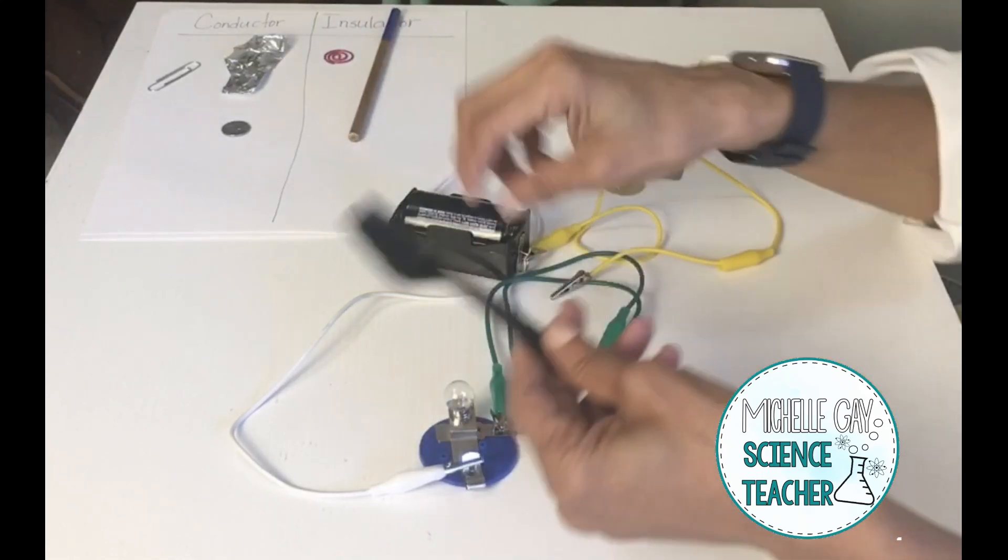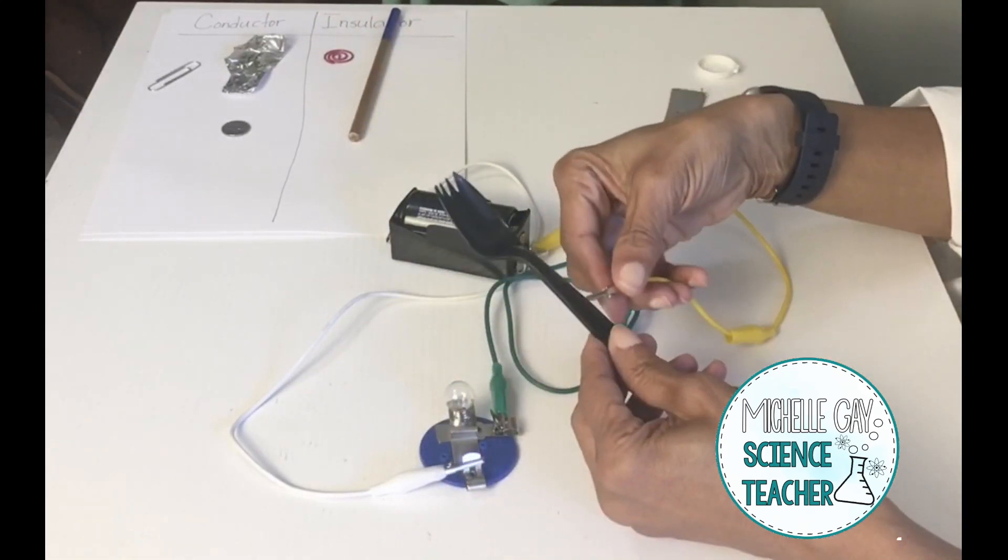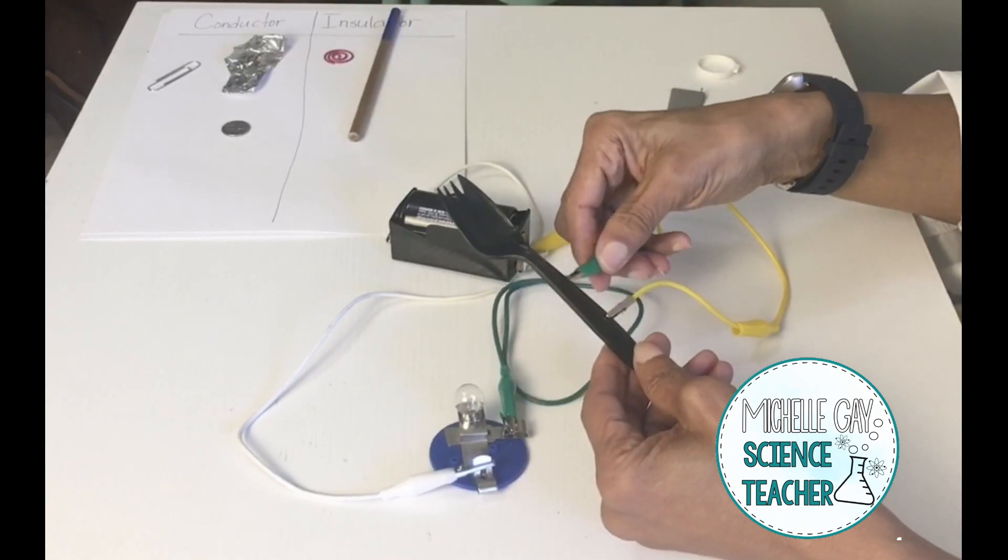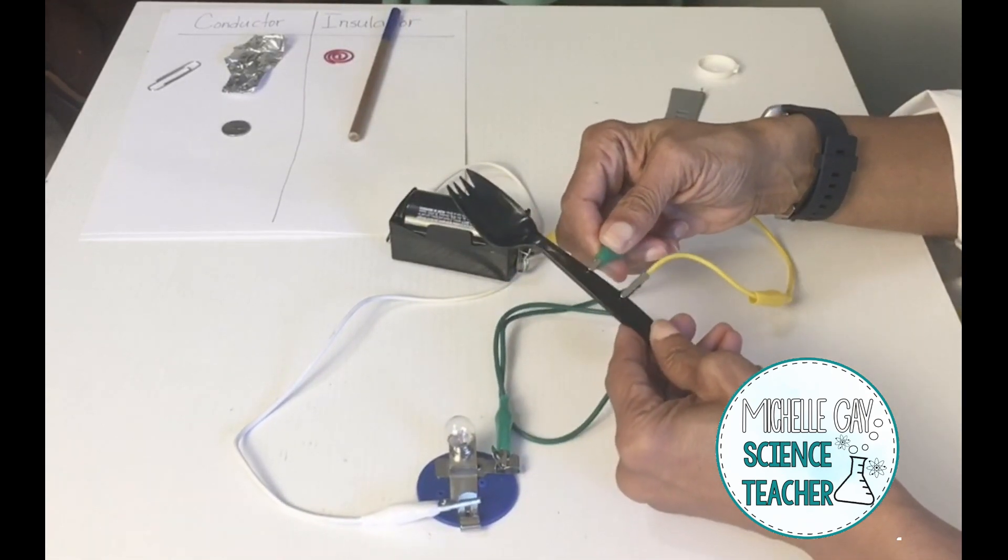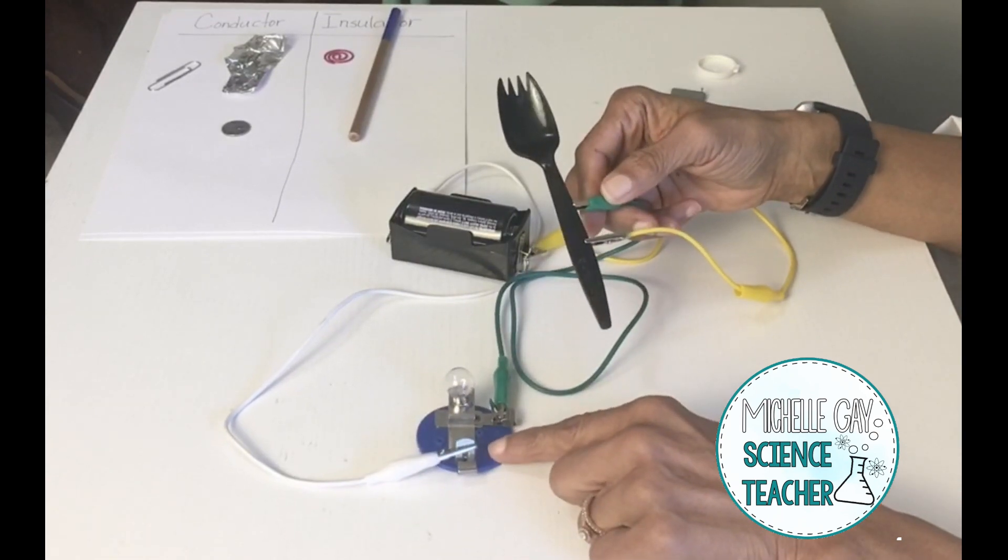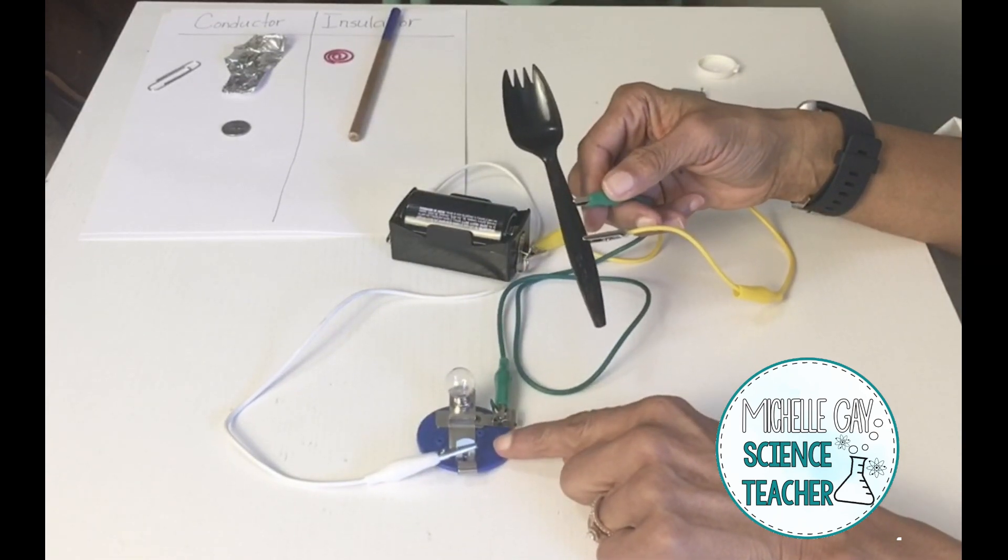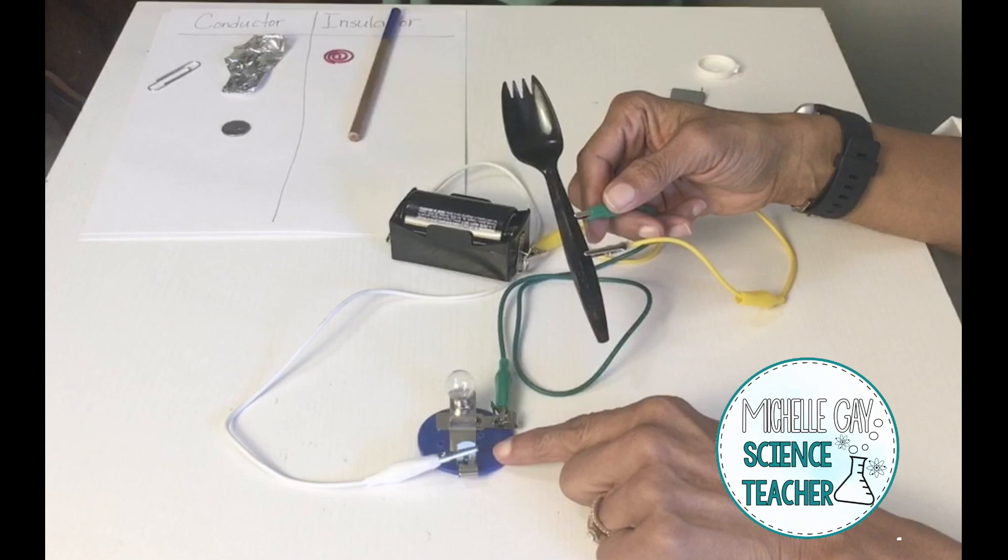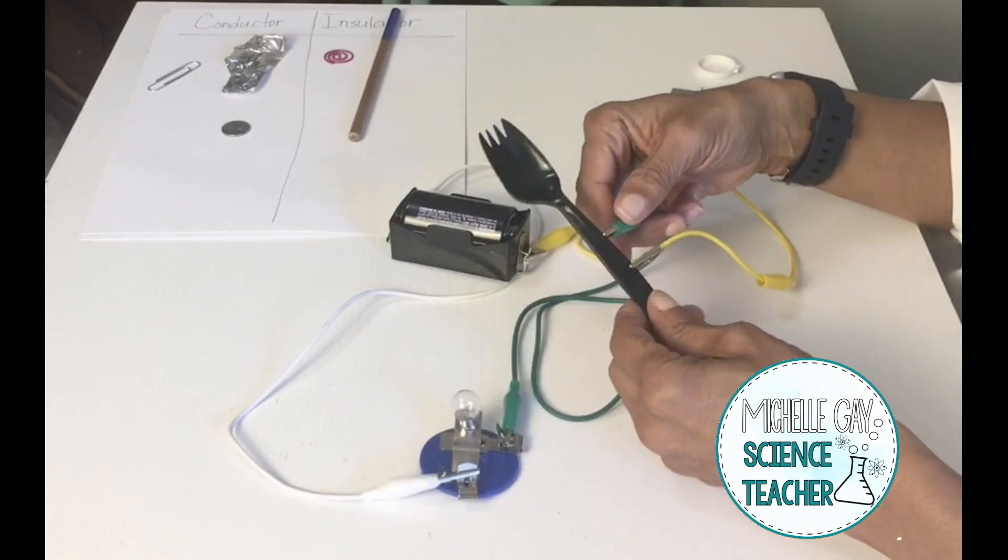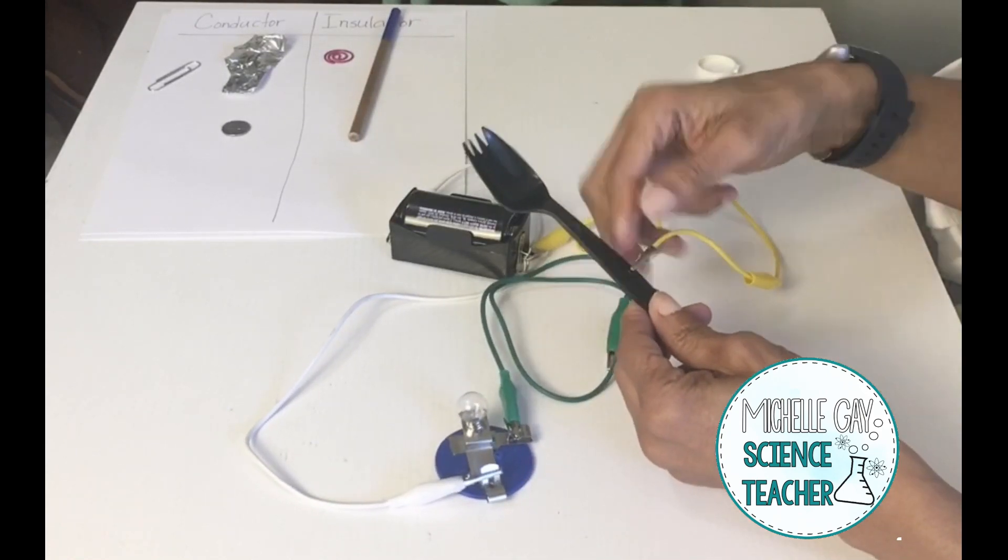We're going to test out the spoon. The spoon is an insulator. It stopped the flow of the current charge. It breaks the circuit.